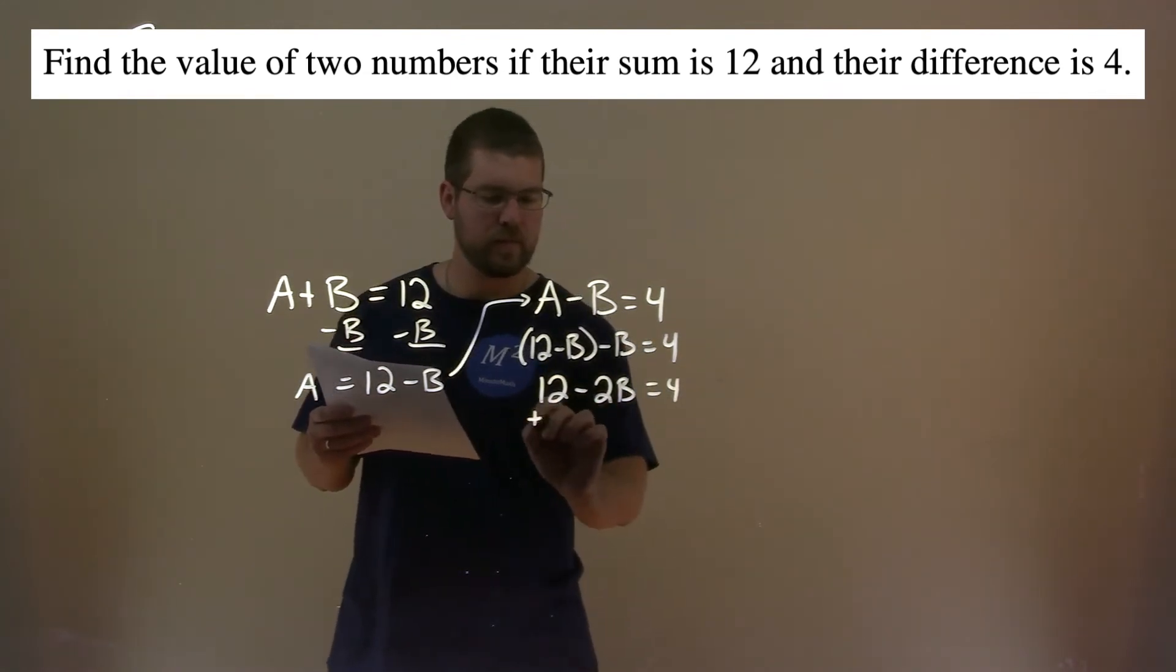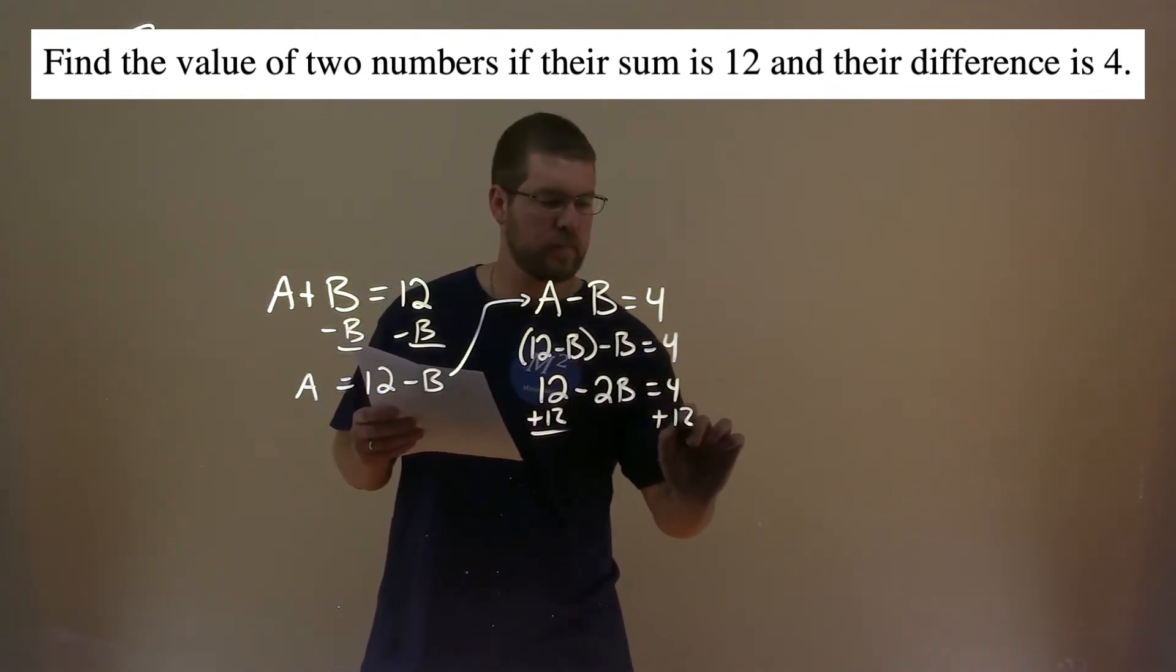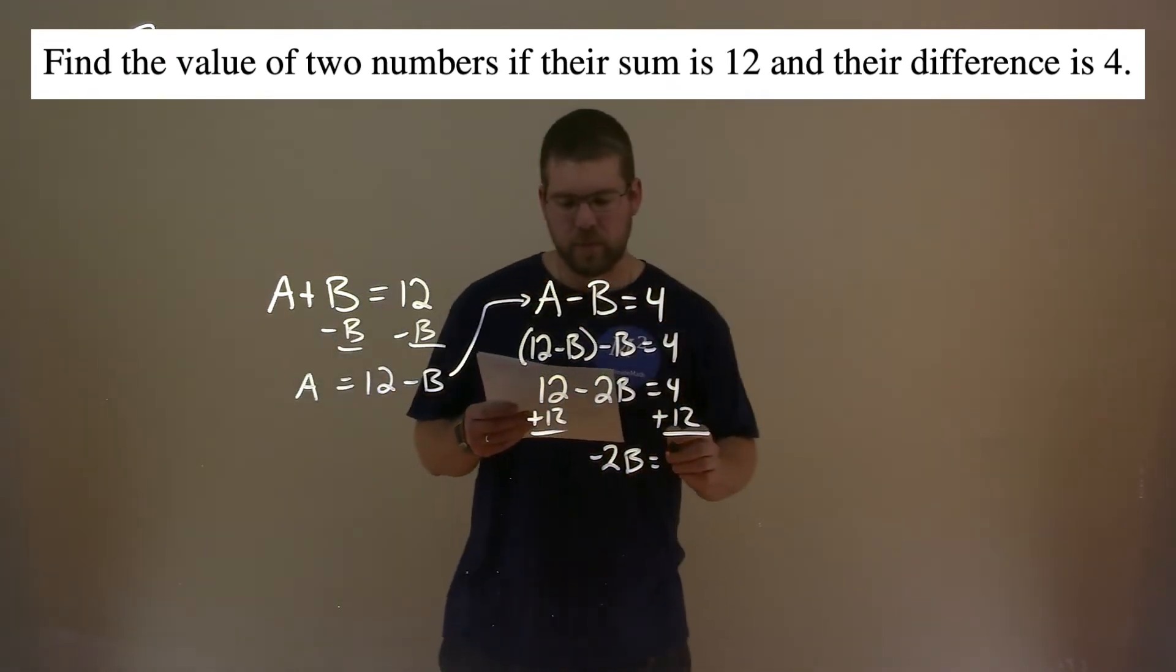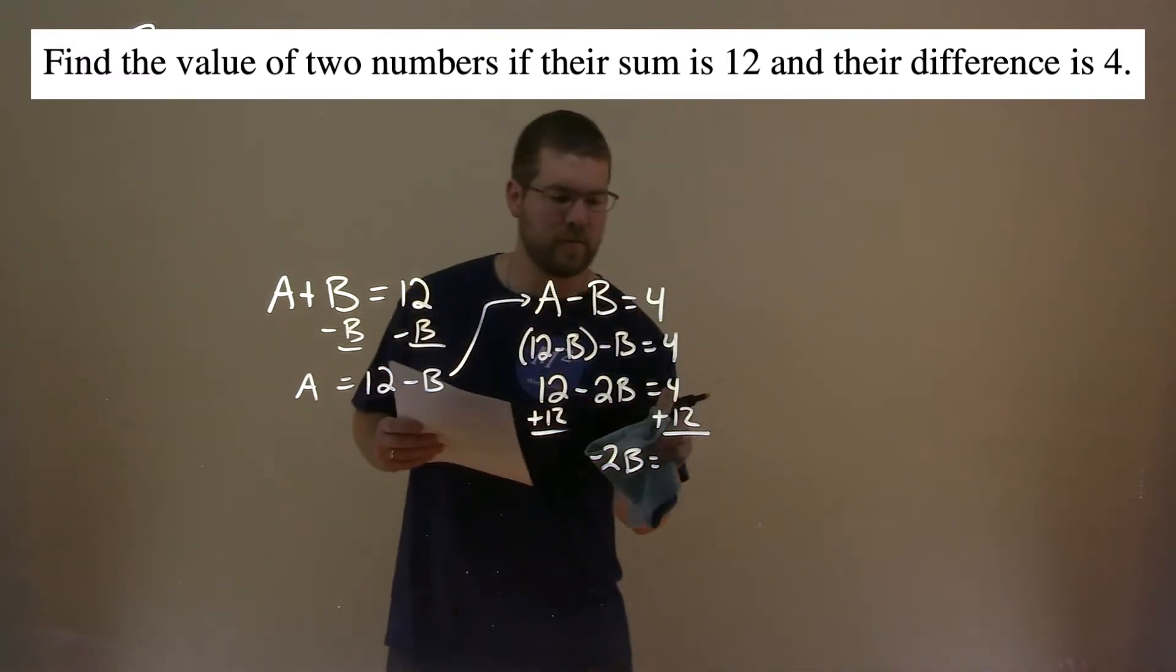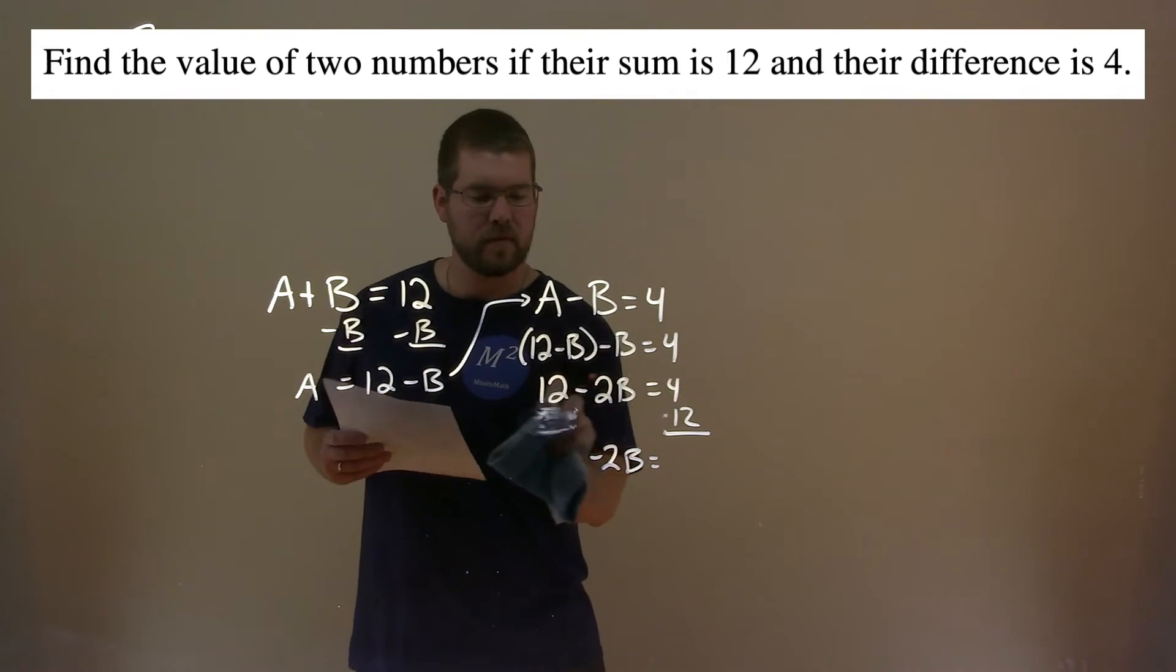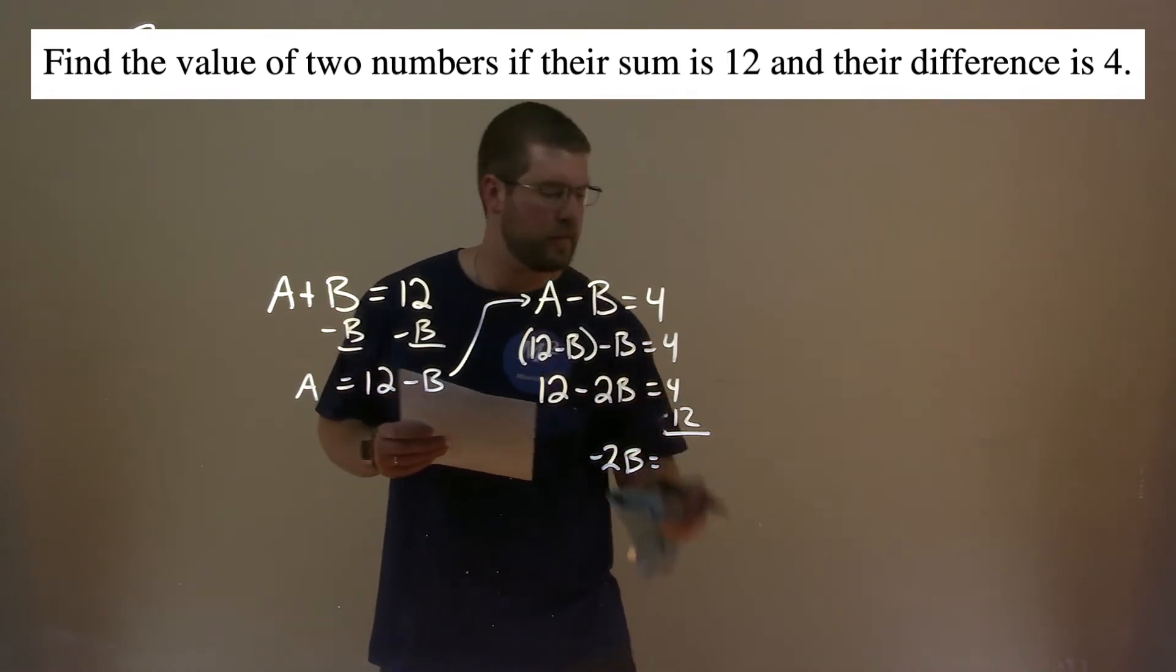Add 12 to both sides. Negative 2B is 4 plus... oh, sorry. Subtracting the 12 to both sides, almost made a mistake there. Happens sometimes.